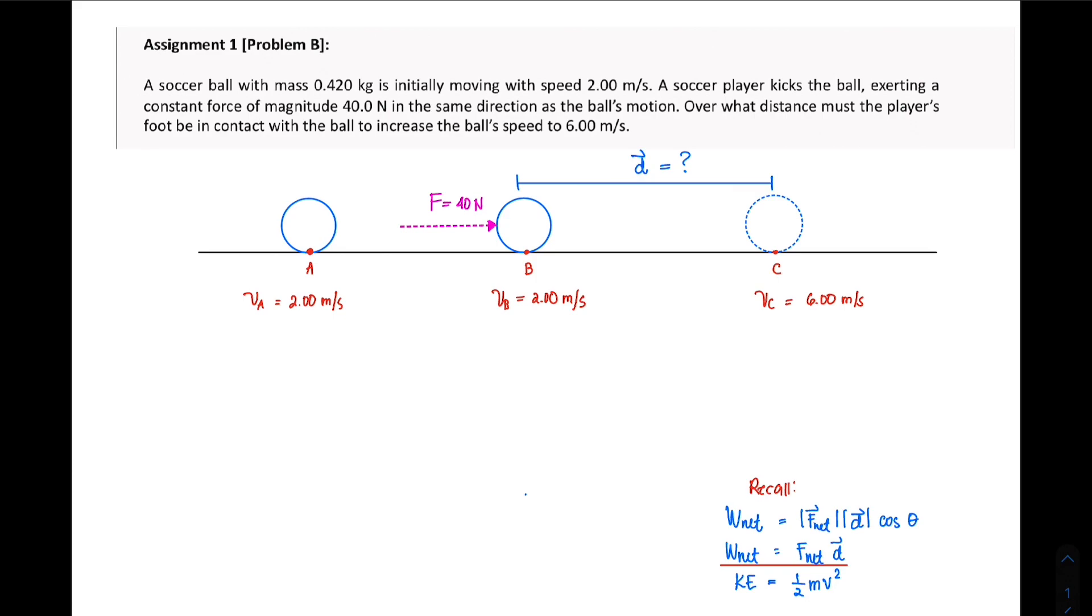If you notice, I made points A, B, and point C just to denote that at these specific points, these are the values that I should note. The problem says that it's initially moving with a speed of 2 meters per second, so at point A it has a velocity of 2 meters per second.